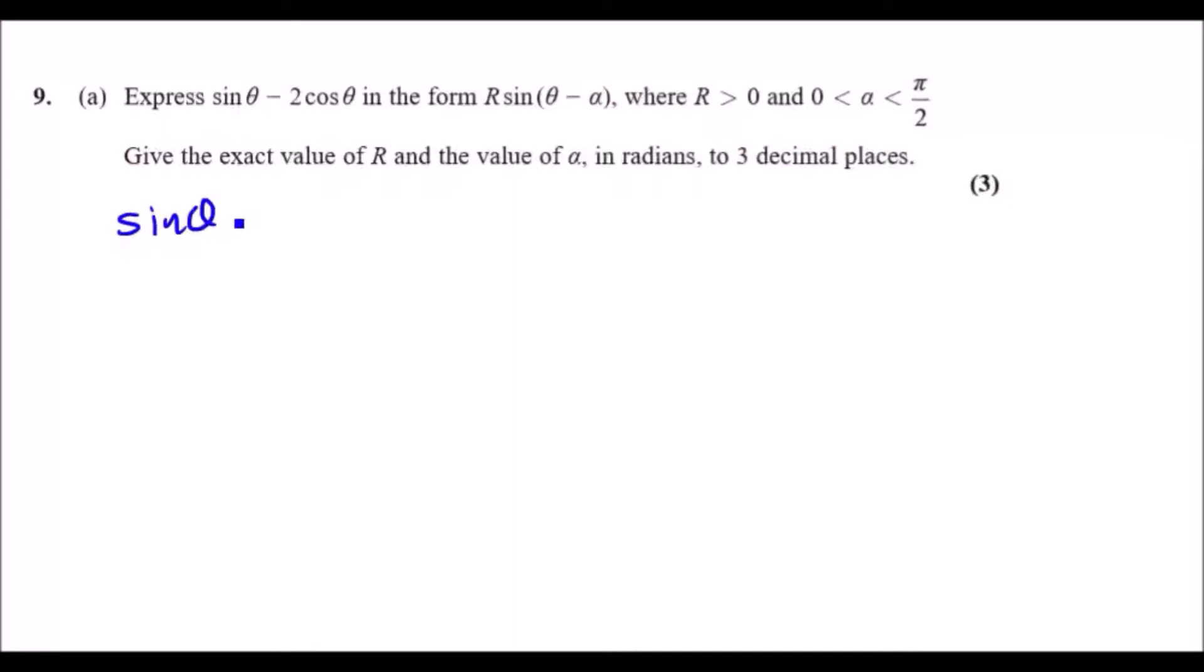It's going to be sin θ - 2cos θ must equal R sin(θ - α). What you could do here is realize that this is an expanded trig form in the form of sin(a ± b). Always try to keep this in mind.